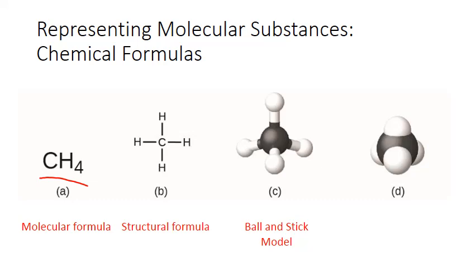The ball-and-stick model of the molecule shows the three-dimensional geometry. Those four bonds off the carbon are not actually flat or 90 degrees from each other as implied by the structural formula. Instead, they extend into three dimensions around the central carbon atom.